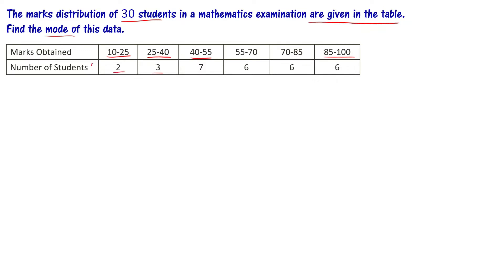The frequency for the first class is 2, for the second class is 3. This is grouped frequency distribution data.